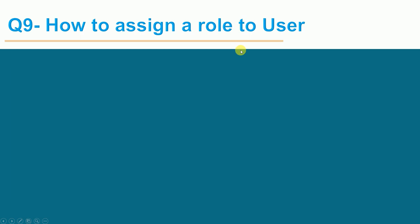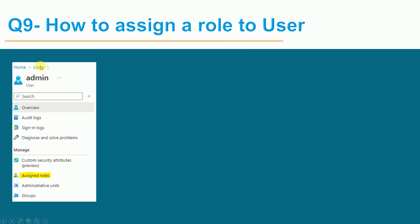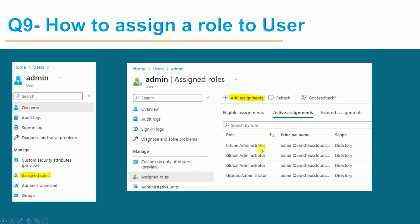How to assign a role to a user: search for the user and go to the property called Assigned Roles. Click it and it will show the active assignments for that user. If you want to add more assignments, click Add Assignment. A new window will open with all available roles — such as Intune Administrator, Global Administrator, or Security Administrator. Select the role and click OK to assign it to that user.